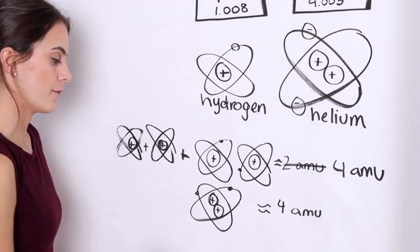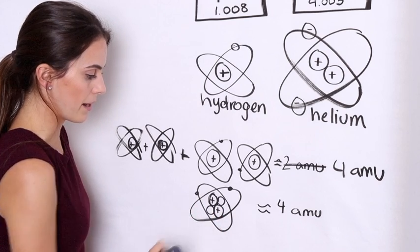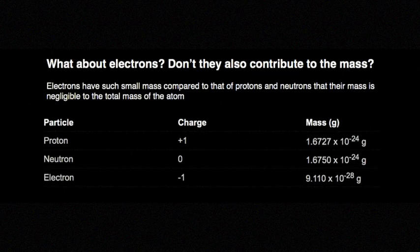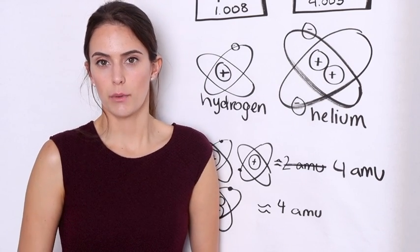You may know this accounts for the two neutrons in the nucleus of the helium atom. But scientists at the time didn't know about the neutron yet and were puzzled.